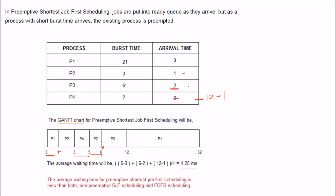P3's waiting time is 6 minus 2 = 4. P2 arrived at time 1 and was immediately served, but had to wait again from time 2 to 5, so waiting time = 5 minus 3 = 2. The total average waiting time is (2 + 4 + 11) / 4 = 4.25 milliseconds, which is less than both non-preemptive SJF and FCFS.